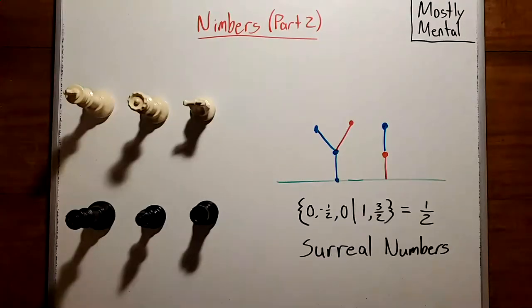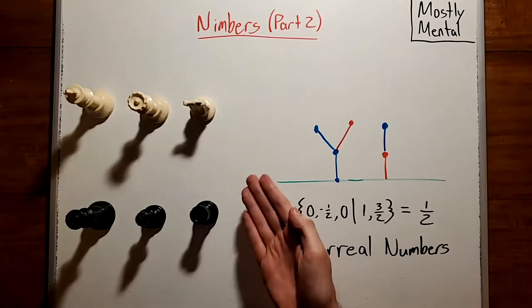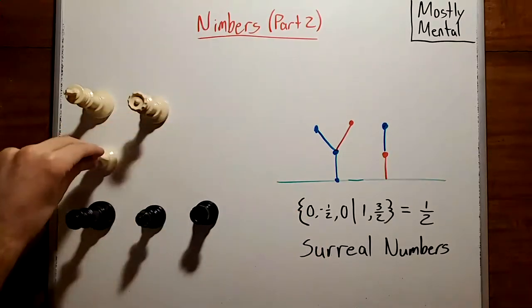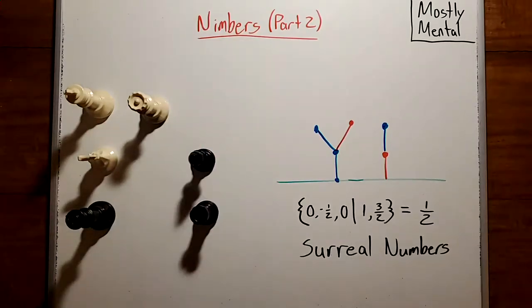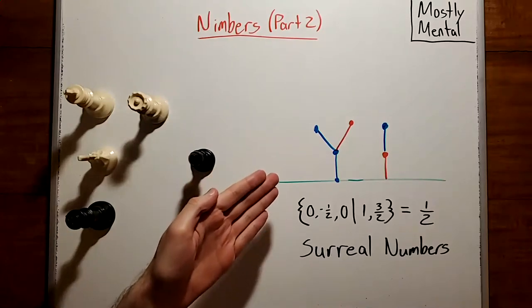In all the games we've analyzed so far in this series, we've made one key assumption. Both players always have the same moves available to them from any position. That is, we've looked at so-called impartial games. But there are plenty of games like chess, where one player can only move the white pieces and one player can only move the black, where that assumption doesn't hold. And if we remove that restriction and analyze what are known as partisan games, we get a totally different structure. In fact, we can create an entirely separate number system from them.